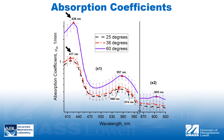The double absorption peak of oxyhemoglobin between 545 and 575 nanometers is discernible at lower temperatures, but is replaced by a single peak of deoxyhemoglobin at approximately 557 nanometers at 60 degrees Celsius. In addition, a deoxyhemoglobin absorption band appears around 905 nanometers.